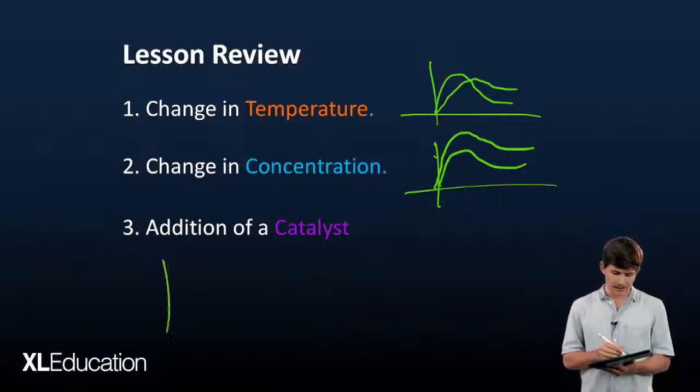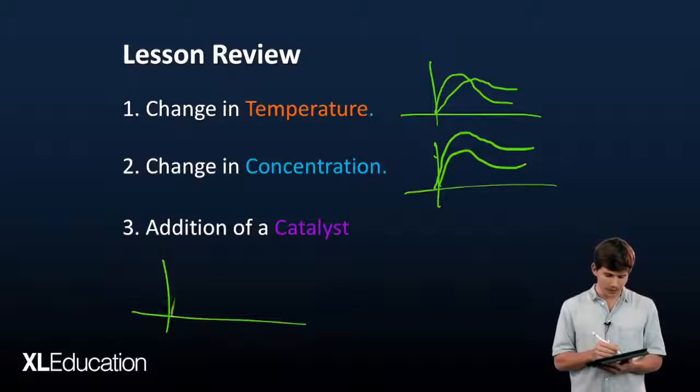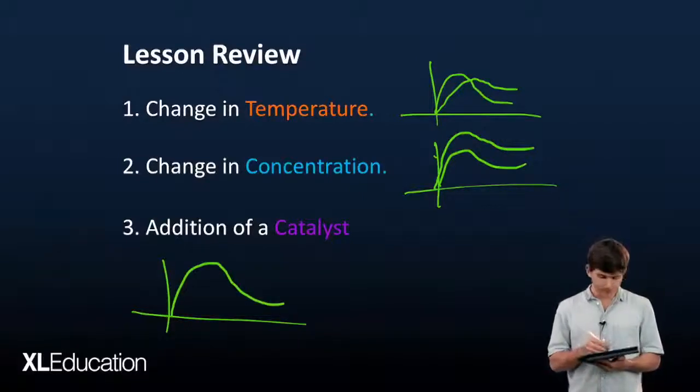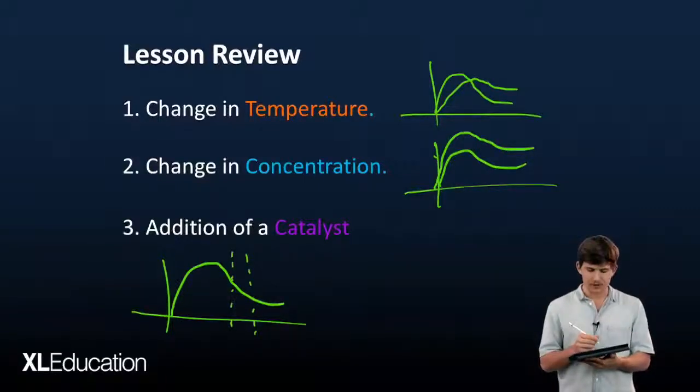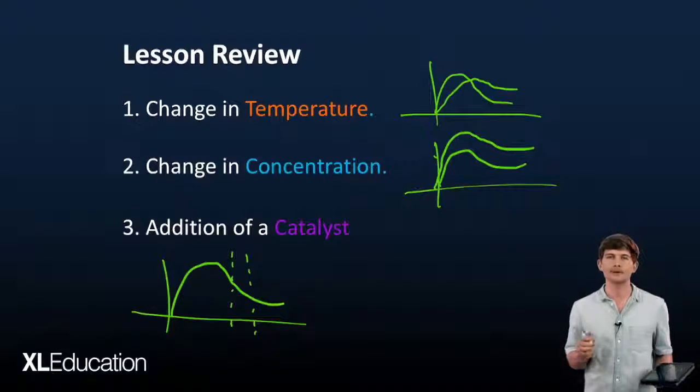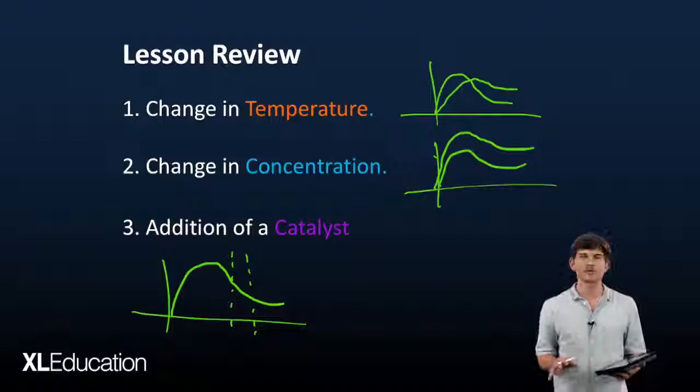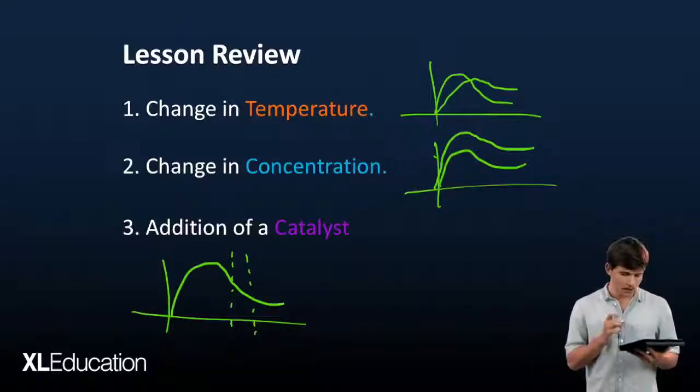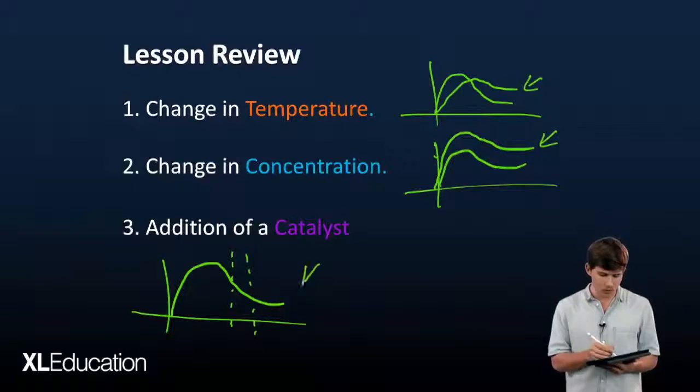The final one is the catalyst. The catalyst doesn't do anything other than change the activation energy of the curve we already have. All the catalyst does is shift that EA value down. That's everything you need to know about Boltzmann curves. When you get asked questions about this and they give you a Boltzmann curve, remember the different forms these curves took.